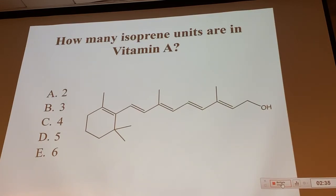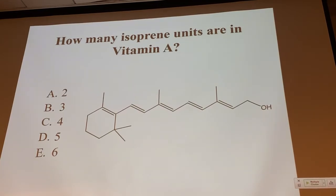Remember, isoprene units have a four-carbon chain with a one-carbon branch. How many isoprene units in vitamin A? Four isoprene units — very good. Who would like to tell us where they started? The best way to do this is to start at one end of the molecule, pick one isoprene unit, and then figure out where the rest are.